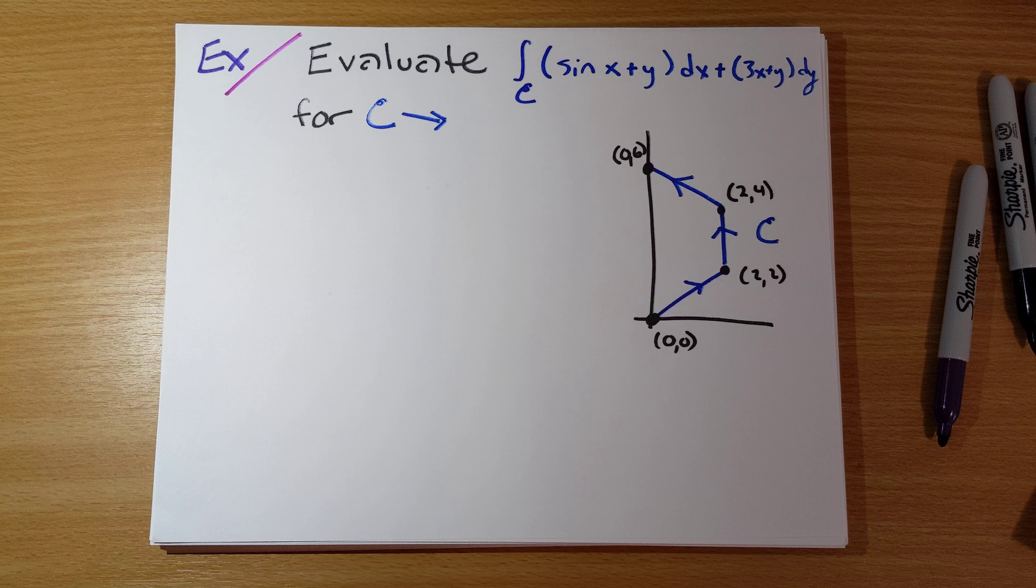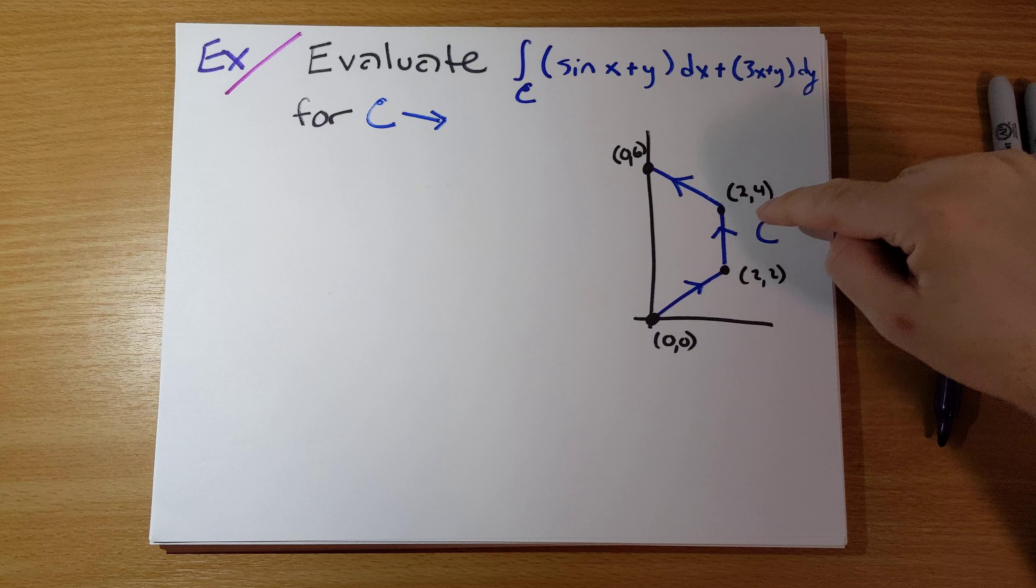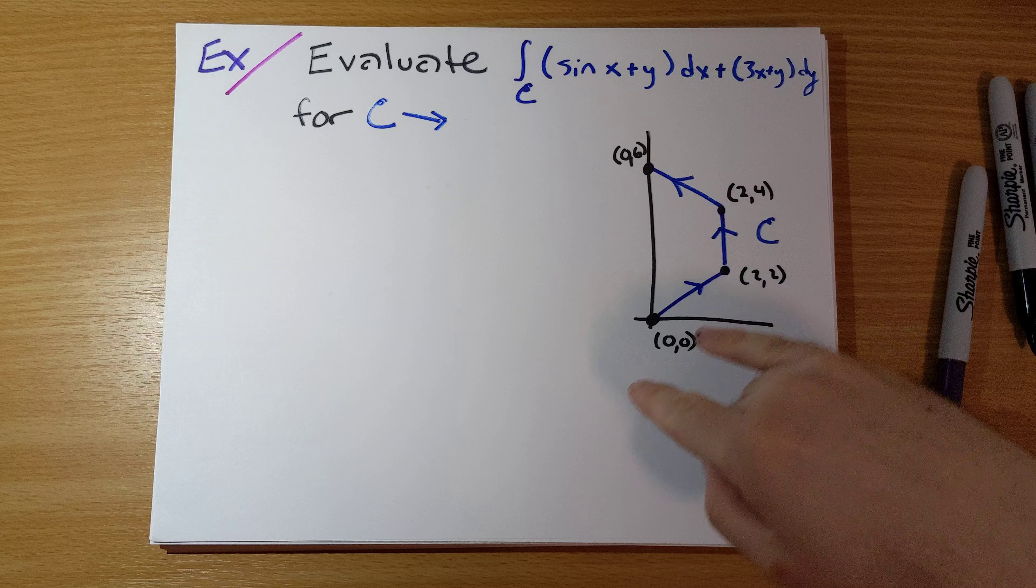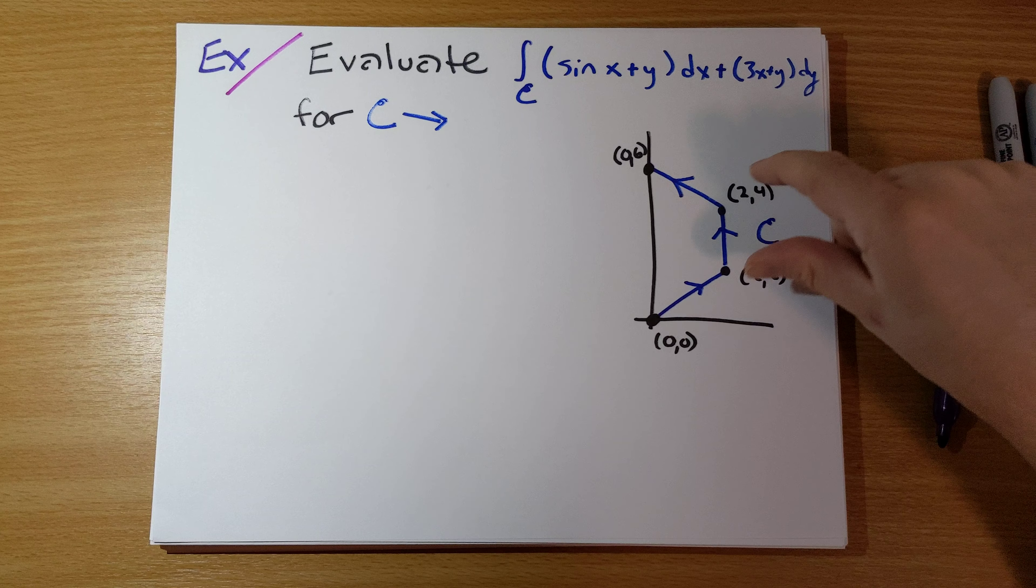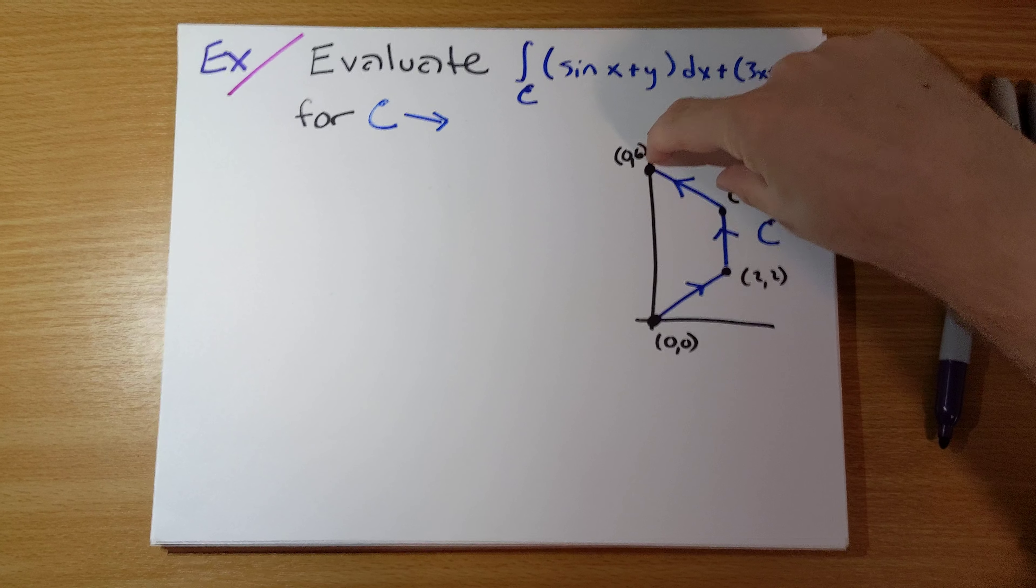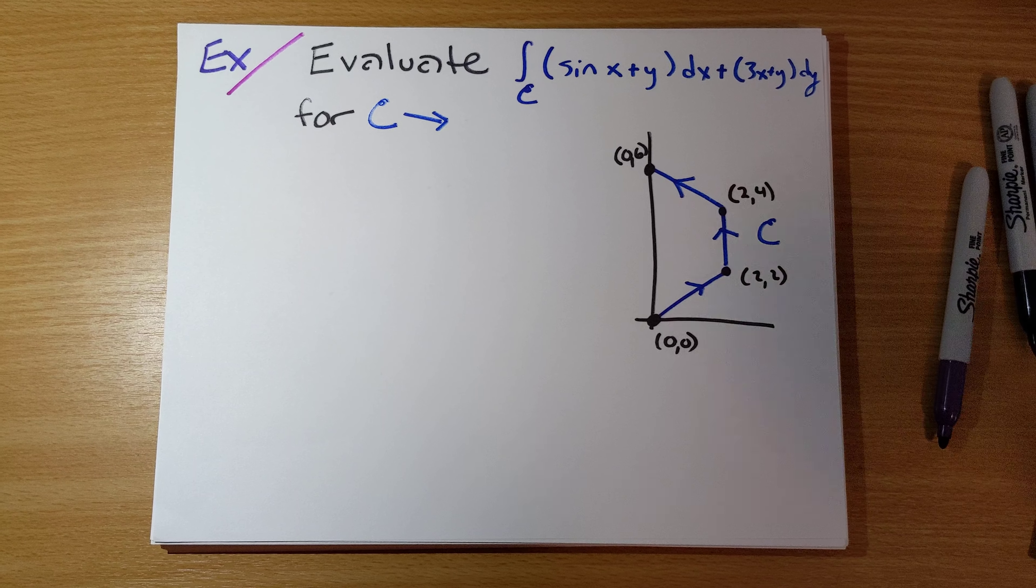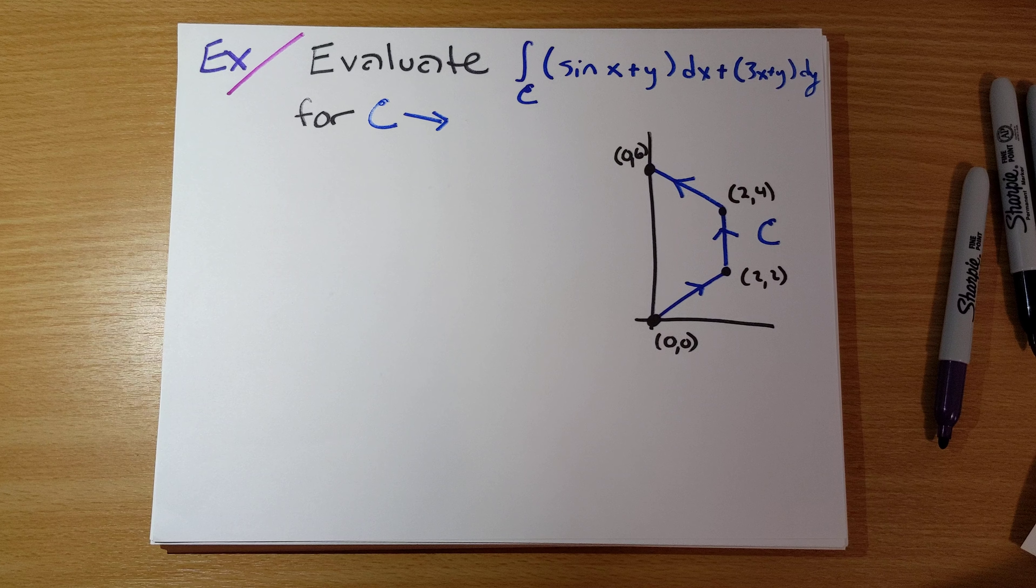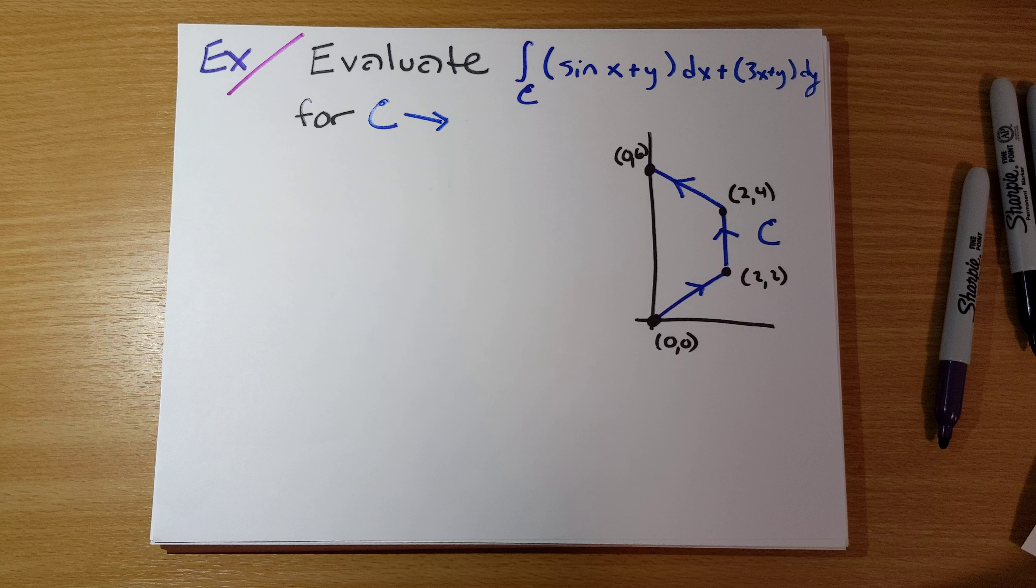The first way we might think about doing this is to parametrize each line segment and calculate the line integral for each one. That definitely works, but there is a more clever way to do it using Green's theorem.